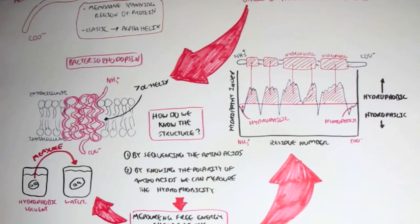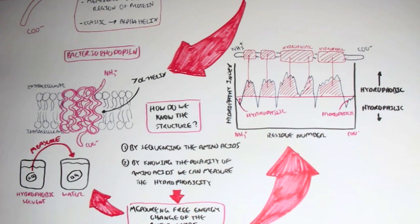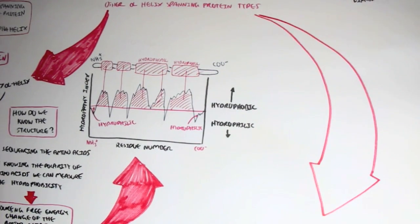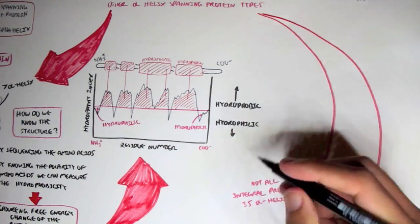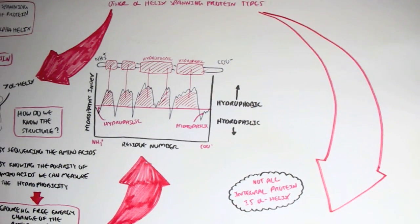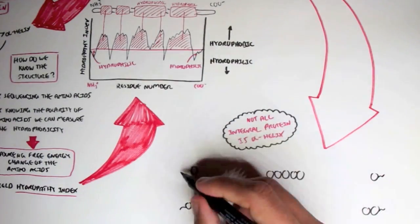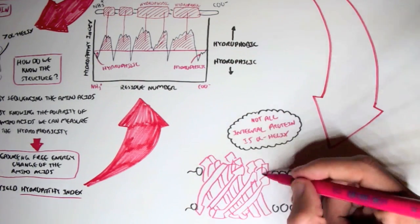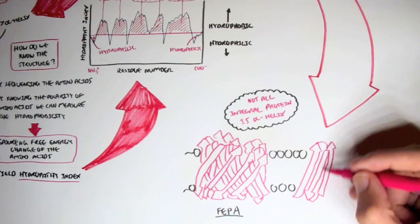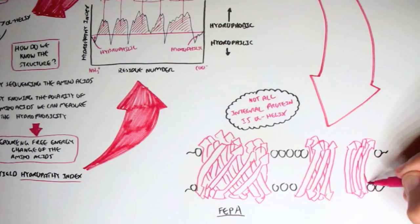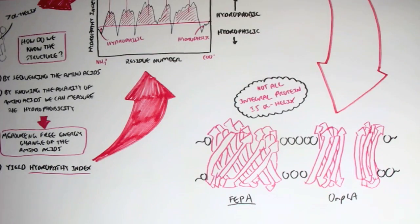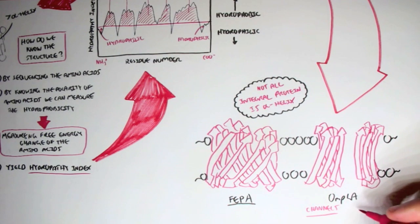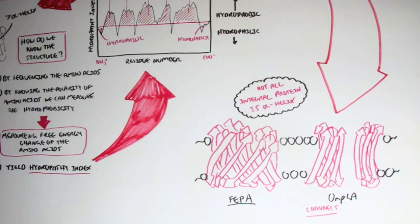You can compare and see how the amino groups and carboxyl groups are on the outside. Note that alpha helixes are not the only membrane-spanning proteins — there are also beta sheets that span the membrane, such as FEPA and OMPLA, which is a channel. It's just interesting to know that beta sheets can also span the membrane, not only alpha helixes.